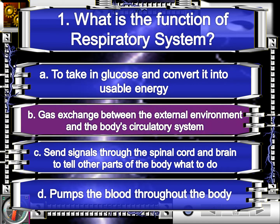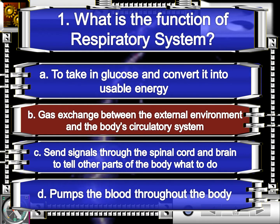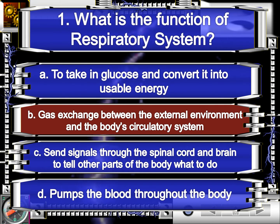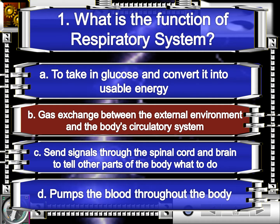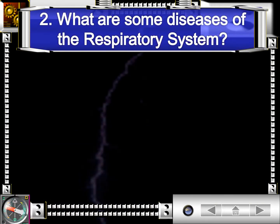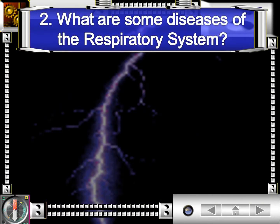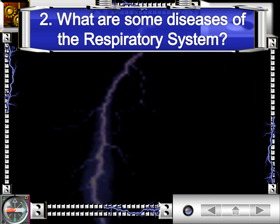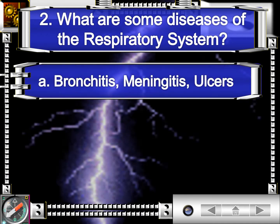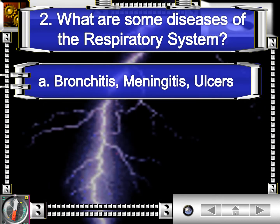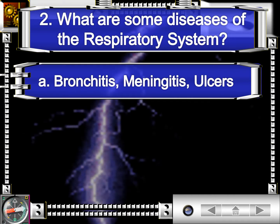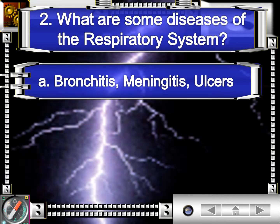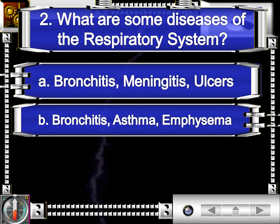The correct answer is letter B, gas exchange between the external environment and the body's circulatory system. Question number two. What are some diseases of the respiratory system? Letter A, bronchitis, meningitis, ulcers.